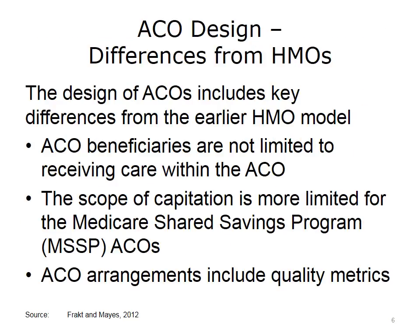Given the history of HMOs, many people worry about ACOs repeating the past. Like HMOs, ACOs involve providers taking on financial risk rather than simply being paid for each service provided to patients. How do we use lessons learned from the HMO models to positively inform the design of ACOs? ACOs include some design elements meant to prevent those problems and encourage high-quality care. Unlike HMO members, Medicare ACO beneficiaries may choose to obtain care outside the ACO and still have coverage for those services. The ACO is responsible for the cost of care for its assigned beneficiaries, regardless of who provides the particular service. This provides greater coverage for beneficiaries, and it reduces the incentive for an ACO to refer patients away for high-cost services. The approach to payment also is different.